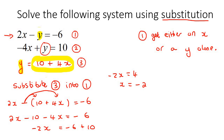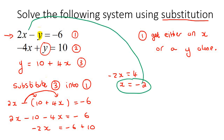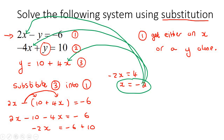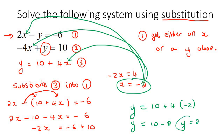To find Y, you have options. You can plug that X value back into equation one, equation two, or as I like to do, into the third equation, because Y is already by itself there. So Y equals 10 plus 4 times negative 2, which is 10 take away 8, so Y equals 2. The final answer is X is negative 2 and Y is positive 2.